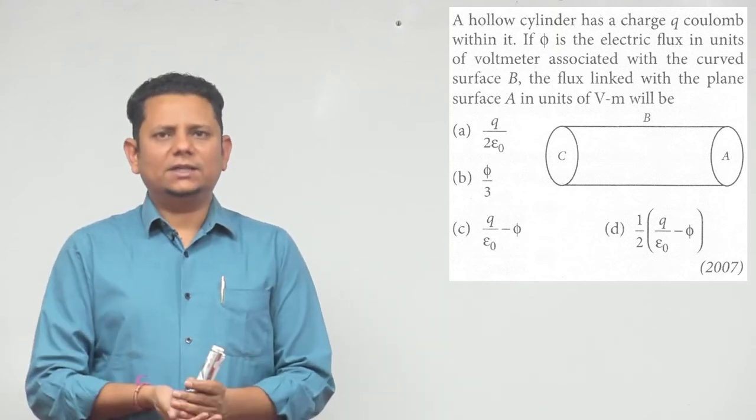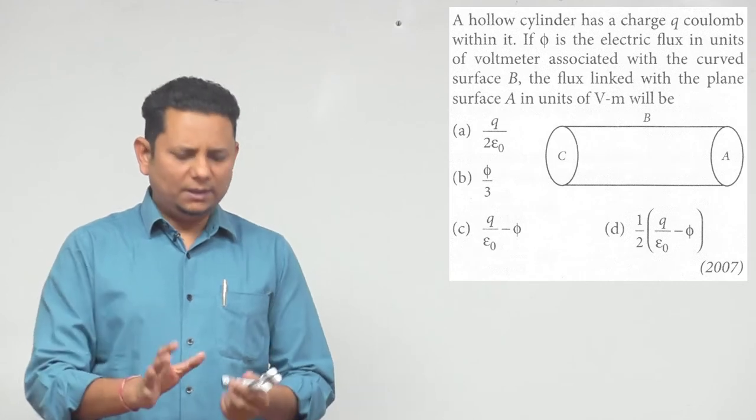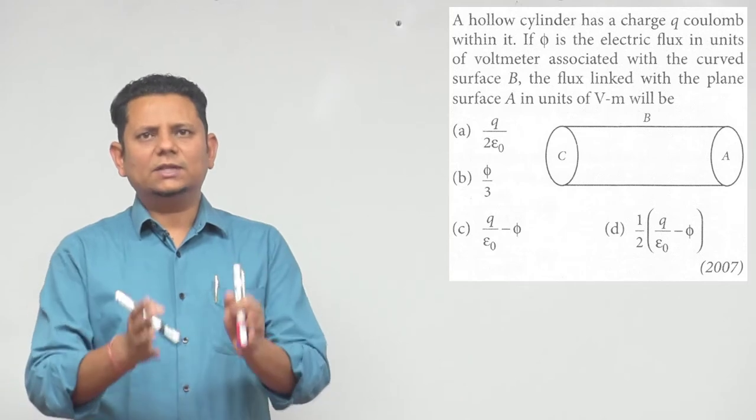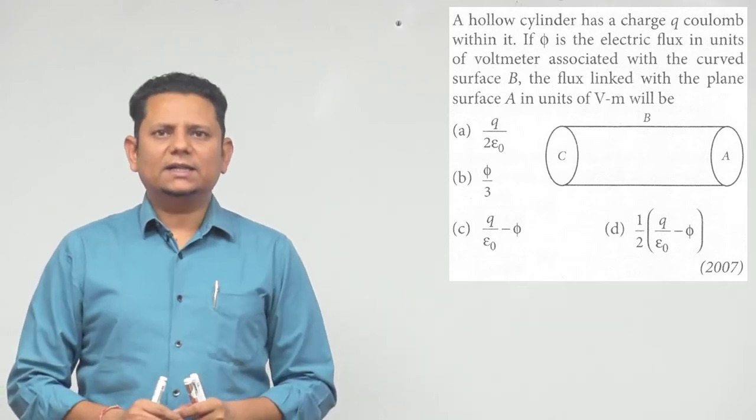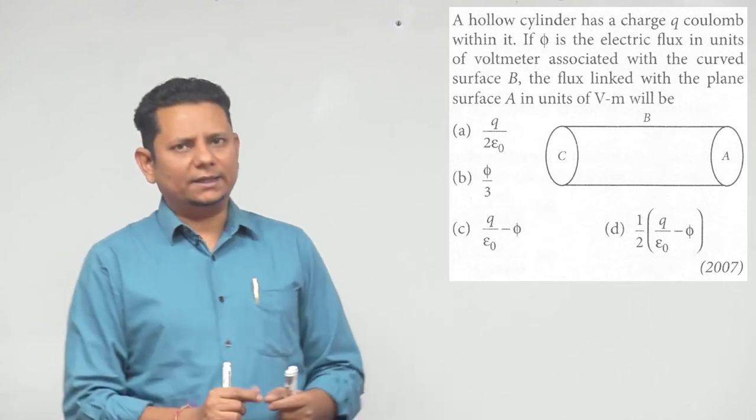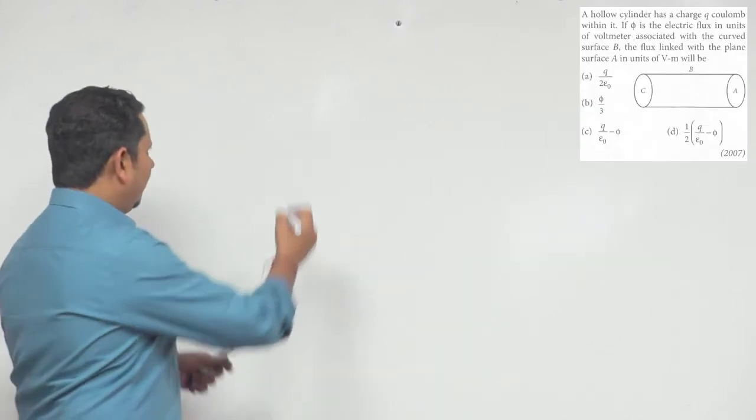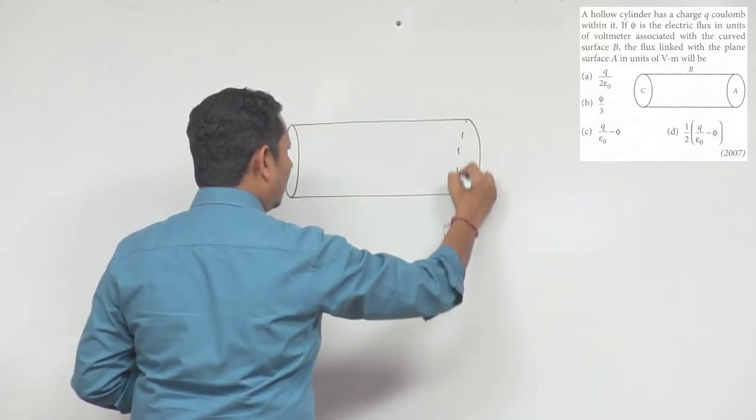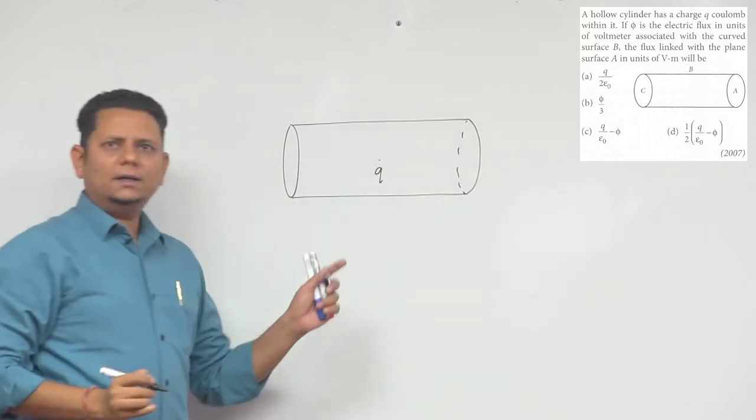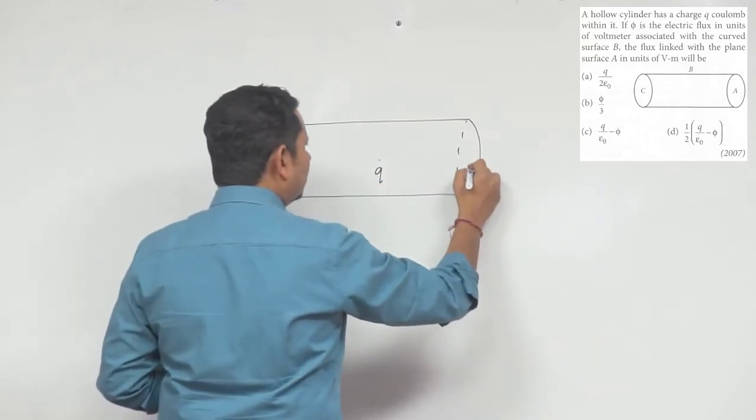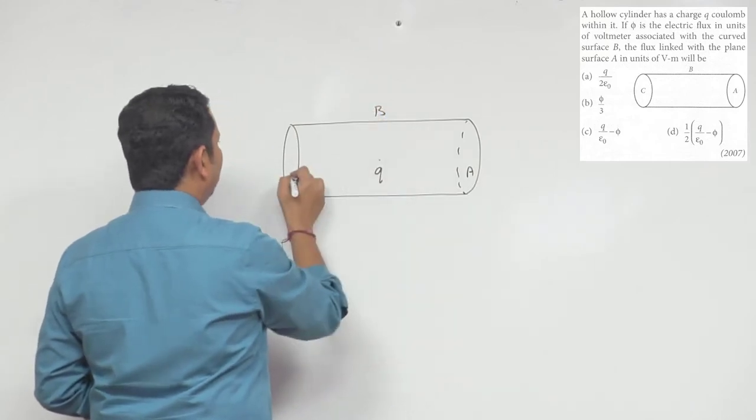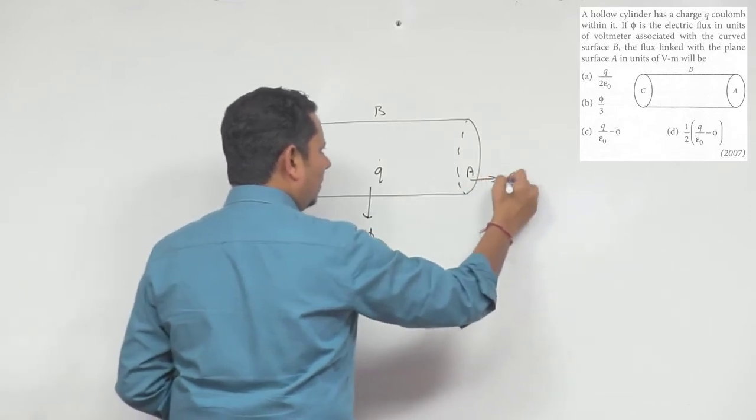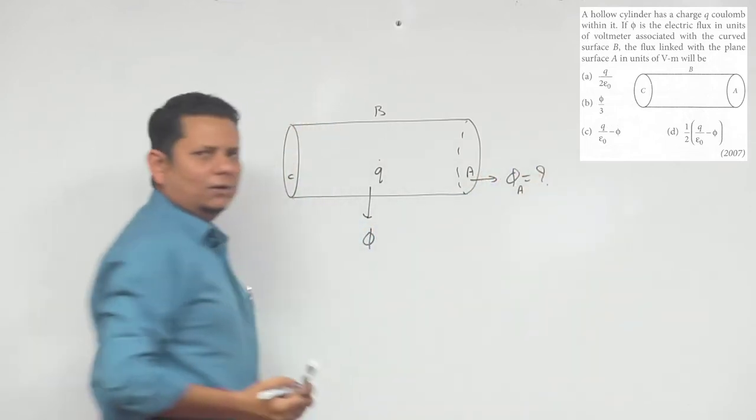When we solve this question for JEE students in class, I'll show you two methods. One is the direct formula using common sense, because we don't have to do calculations here. After that, we'll see the exact calculation. The situation is: here you have a cylinder, and inside this cylinder, somewhere at the center, you have a charge q placed. We are given three surfaces: this surface is named A, this is B, and this is C. We are told that the flux coming out from this is called phi. We have to find the flux phi_A coming from this surface.